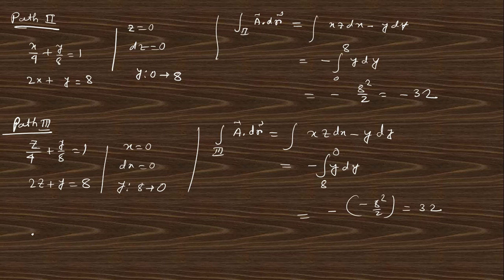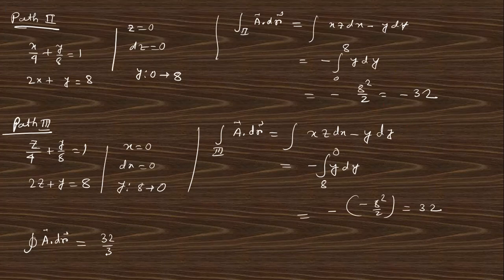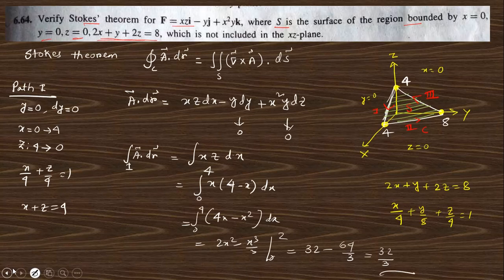The total closed line integral is the sum of the three path integrals: 32/3 + (−32) + 32 = 32/3. So the left-hand side of Stokes theorem gives 32/3. Now we need to find the right-hand side, for which we need to calculate the curl of A.